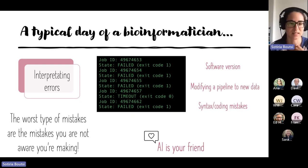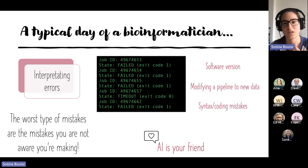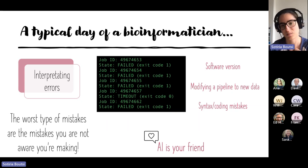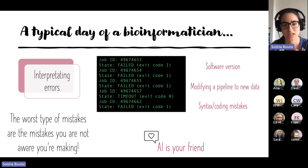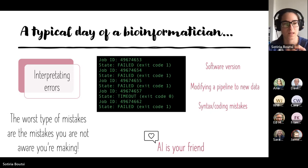There are mistakes you're not aware you're making, and then there are errors where the code isn't running. These are usually due to software version incompatibilities across different software, or a pipeline you're now using on new data that has small differences making your previous pipeline not work. Of course there are also syntax errors and coding mistakes that take a long time to figure out. For all these errors, AI is your friend — I use it a lot to interpret errors and also to generate code to prevent them.